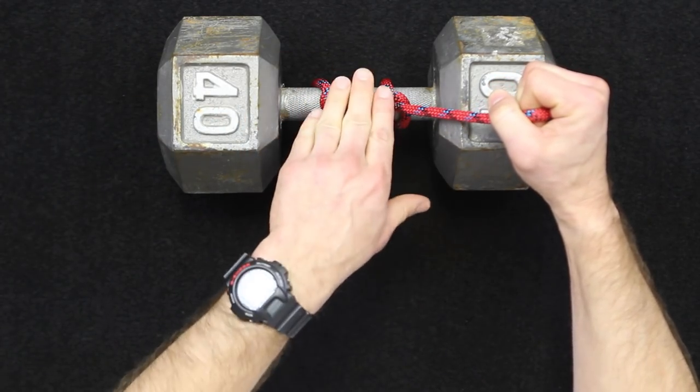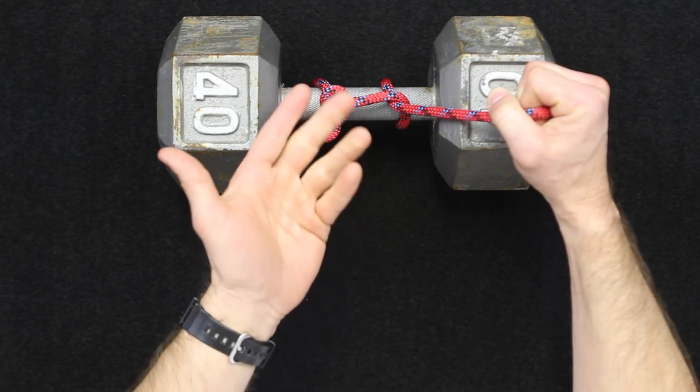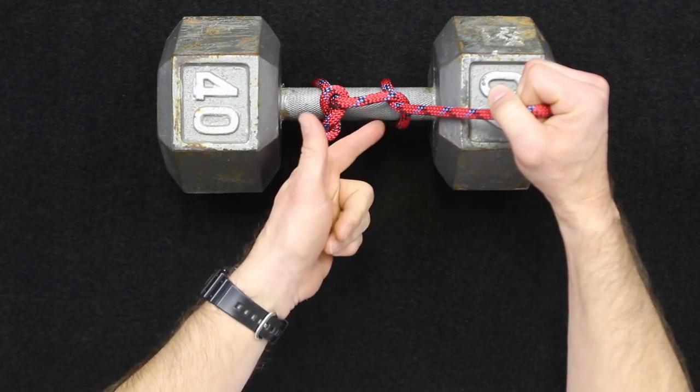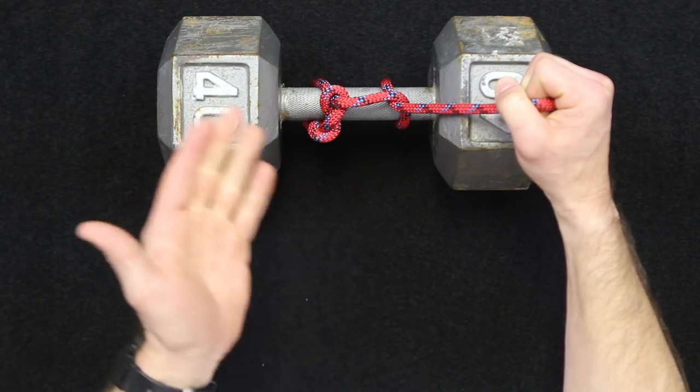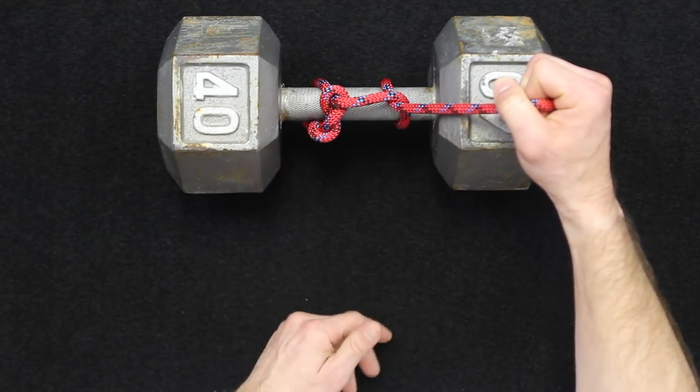So when you're adding these half hitches, it's called the killick, or K-I-L-L-I-C-K. That's another word for this when you add this hitch into it. So essentially you're building upon the timber hitch by adding those half hitches.